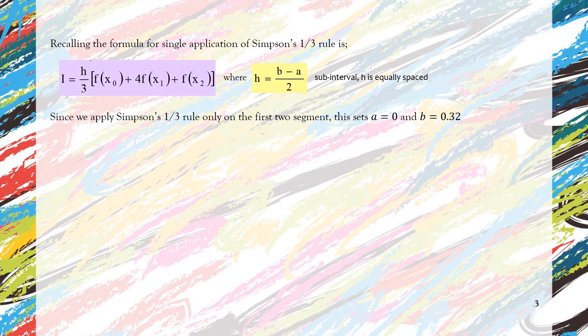So we can calculate the size of h. We use a = 0 and b = 0.32. Take note, we have calculated before h = 0.16 in the previous slide.